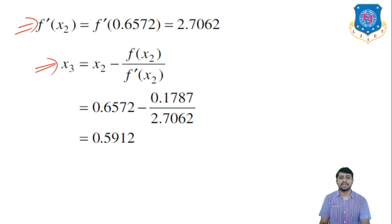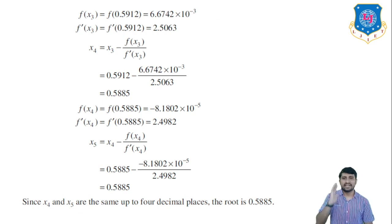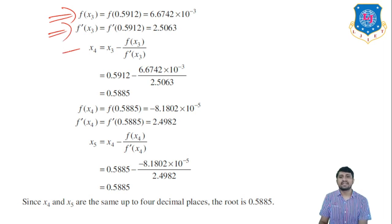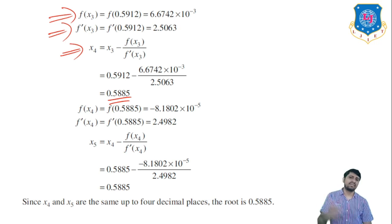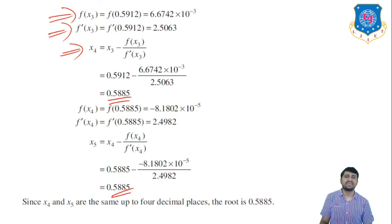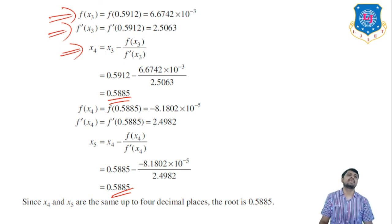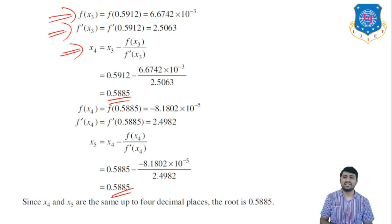Find f(x3) and f′(x3), then compute x4 = 0.5885. Since x3 = 0.5912 and x4 = 0.5885 still differ slightly, continue to find x5 = 0.5885. Since x4 and x5 are the same to four decimal places, the approximate root is 0.5885. In today's lecture we discussed the Regula Falsi method and the Newton-Raphson method. Thank you.